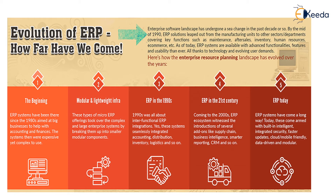Finally, in the 1990s, inter-functional ERP integrations came into existence, where systems seamlessly integrated accounting, distribution, inventory, logistics, and so on. And in the 21st century, the ERP ecosystem witnessed the introduction of several add-ons like supply chain management, business intelligence, smart reporting, and CRM.